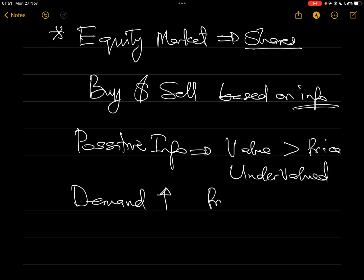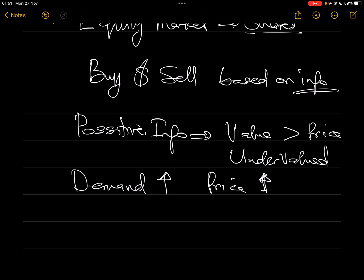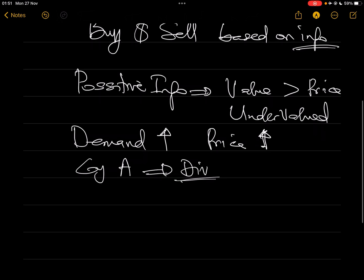From your understanding of supply and demand, when everybody wants to buy and demand is high, you expect the price to also go up. Everybody wants to buy because people have heard about the positive information, which they used to revalue the shares and seen that these shares should actually be worth more than they are currently trading. They run to the market to buy, and they will only buy until the price rises up to the level they valued it. For example, if information comes out today that a company will pay a dividend — positive news — everybody wants to buy it.